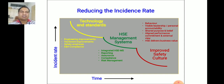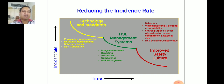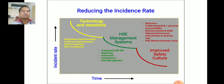With the help of the HSE management system — consisting of integrated HSE MS, reporting, assurance, competence, and risk management — and technology and standards (engineering improvements, hardware improvements, safety emphasis, and E&H compliance), incident rate can be minimized. Safety culture improvement involves: behavior, visible leadership, personality, accountability, shared purpose and belief, aligned performances, commitment, external views, and HSE delivering business value.